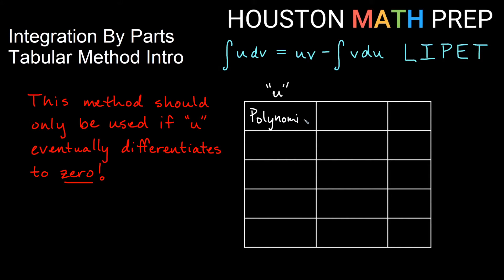If your dv happens to be a polynomial, or you don't have a u as a polynomial, some exponential or something else, this is not something that you want to use. It will be very unclear where to stop in the process if you use tabular method. So again, only if you're choosing u to be a polynomial.